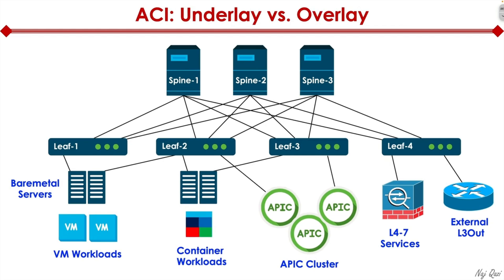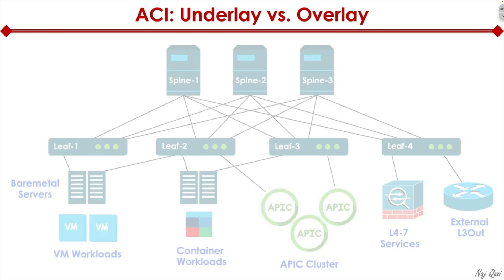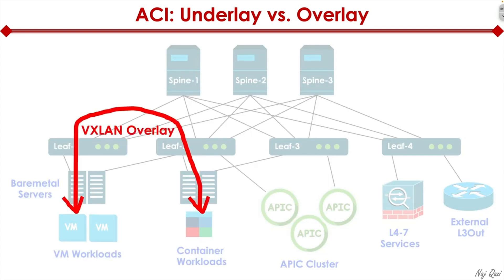Now let's talk about underlay versus overlay. Everything you see from a physical network standpoint — physical spine switches, leaf switches, bare metal servers, routers, firewalls — that is all called the underlay. What becomes the overlay is, for example, a VxLAN tunnel between two VMs that rides on top of this underlay physical infrastructure to allow them to communicate directly with each other. The cool thing about overlay technology is that regardless of how the underlay is designed, we can create different types of topologies to facilitate different types of communication.